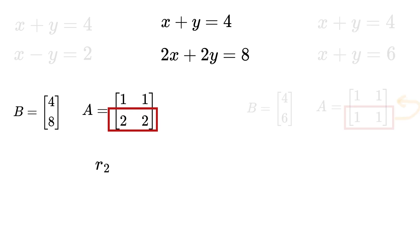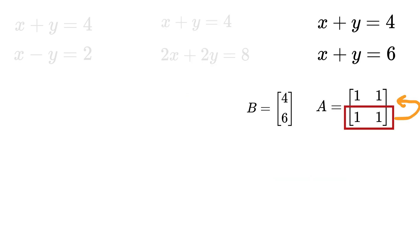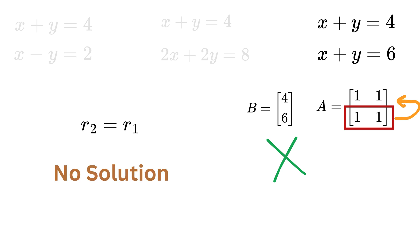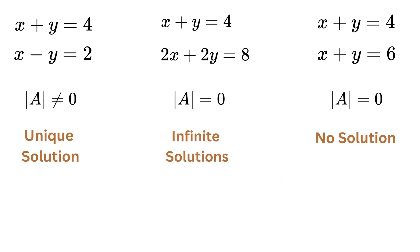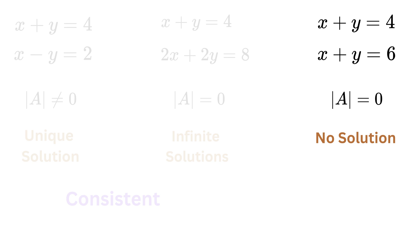For the infinite-solution case, row 2 equals 2 times row 1, and the constant 8 is also 2 times 4 — the pattern follows, giving infinitely many solutions. For the no-solution case, row 2 equals row 1, but the constants 4 and 6 don't match, so the system has no solution. When a system has a unique or infinitely many solutions it is called consistent; when it has no solution, it is called inconsistent.